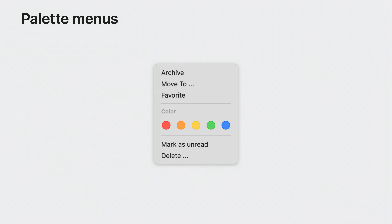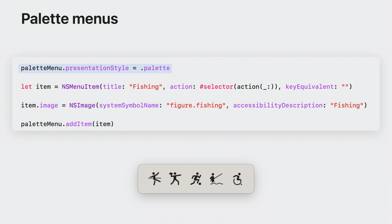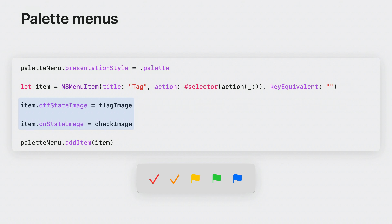Palette menus are an exciting new feature, allowing you to build menus where the items are laid out in a horizontal series — for example, a simple color picker. You can turn any menu into a palette menu by setting the menu's presentation style to palette. For each menu item, set its image. For template images, AppKit will automatically add the appropriate selection tint.